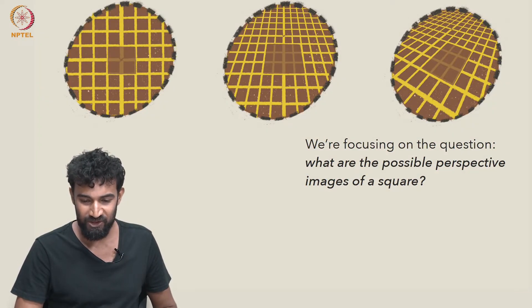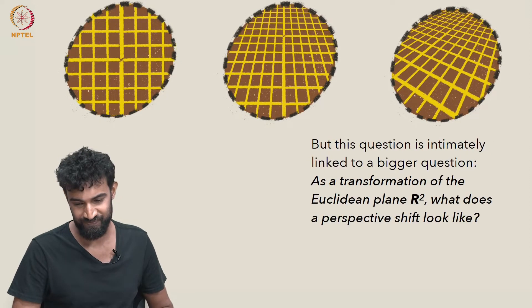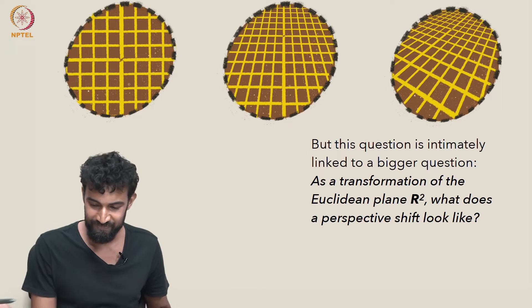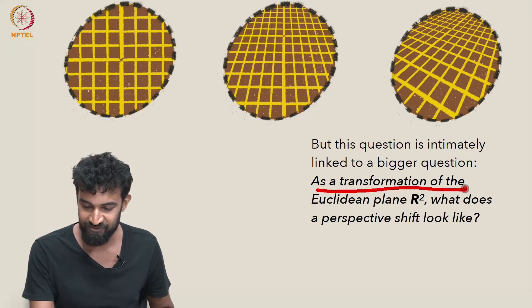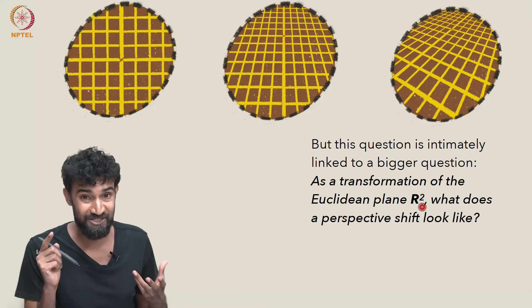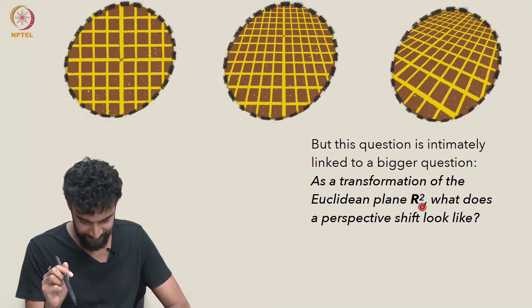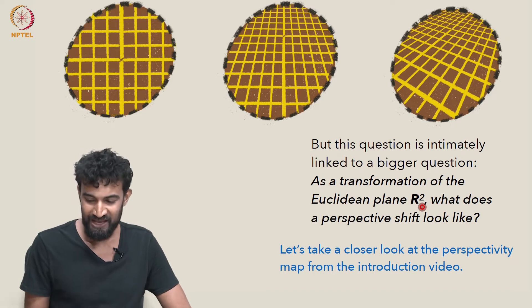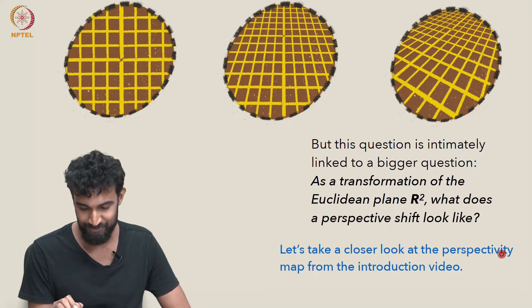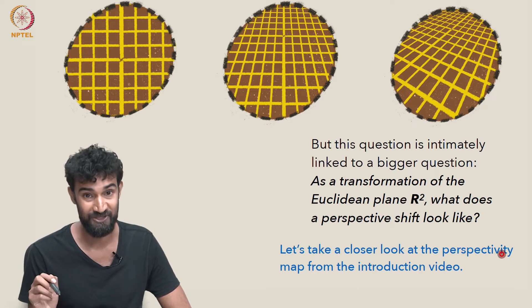One of the reasons we're interested in that question is that it's intimately related to a bigger question. Namely, as a transformation of the Euclidean plane R2, what does a perspective shift look like? Let's take a closer look at the perspectivity map from the introduction video for this week.